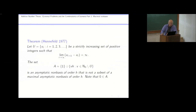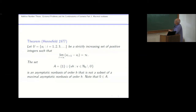Julian Hennefeld gave the following very beautiful construction of a non-basis not contained in a maximal non-basis. We start by taking a strictly increasing set of positive integers where the successive differences go to infinity. Then take the very simple set consisting of the number one, and all multiples of h except those which are in the set U — that is, v times h where v is not an element of U. This is an asymptotic non-basis of order h that is not a subset of any maximal asymptotic non-basis.